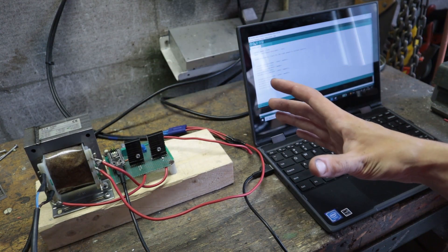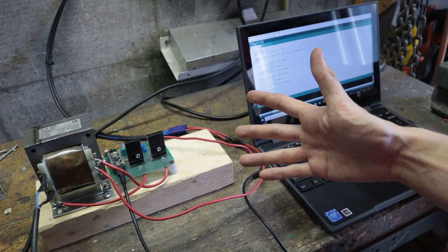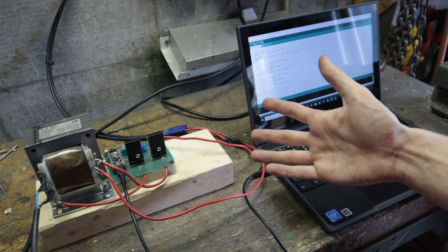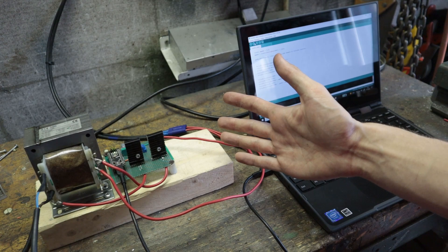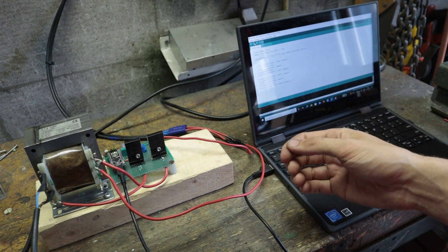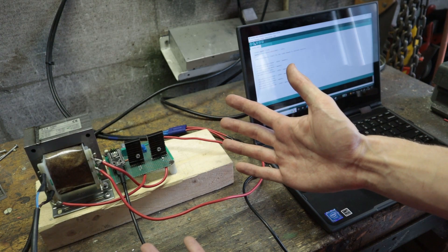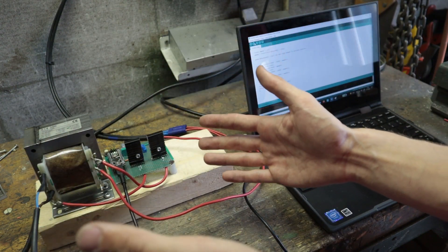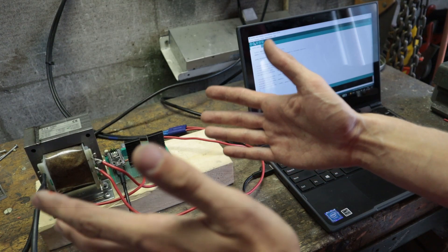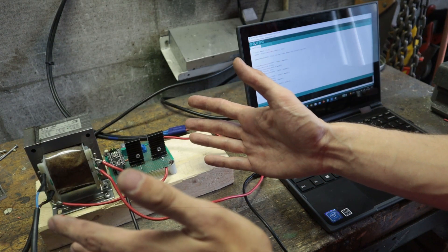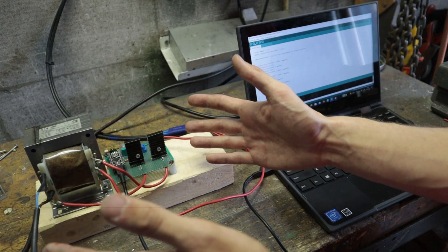But the last thing that we need is actually a way to measure if it's actually working, because right now it's making a bit of noise, I can see the LEDs on the microcontroller are on, but I don't know if I'm actually feeding power back into the grid. So we're going to need to find a way to actually measure if we're feeding power back into the grid and if so how much.